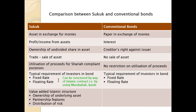Fixed income is the similarity with conventional bonds, but the income may become lower when the asset does not perform as expected. Another similarity of Sukuk with conventional bonds is that, like the conventional bond, Sukuk has a fixed maturity. Sukuk can be issued from three months to one year, and up to 10 years, like the conventional bond.